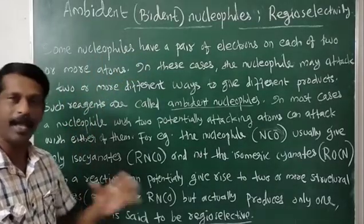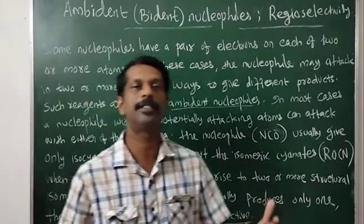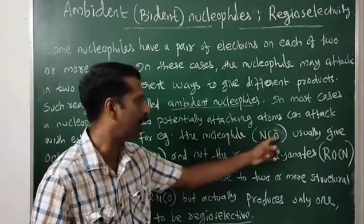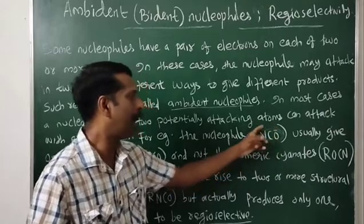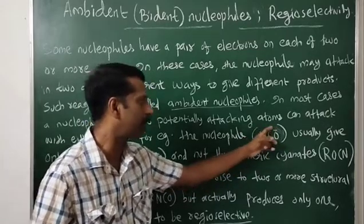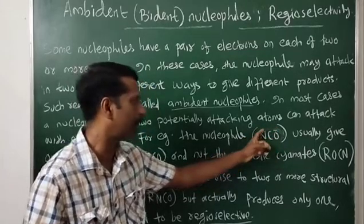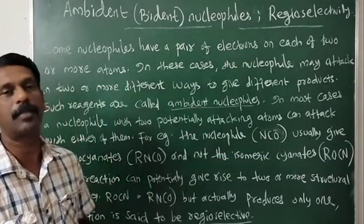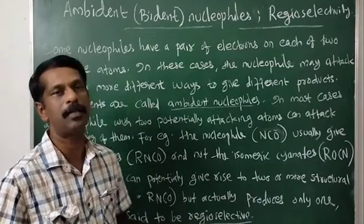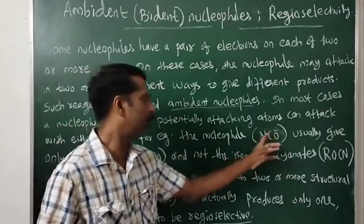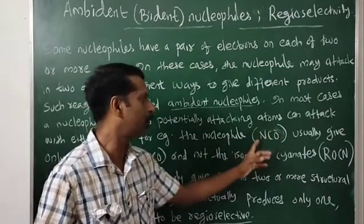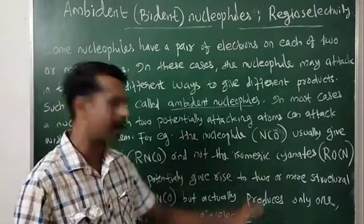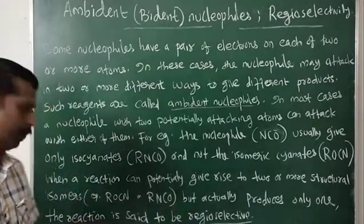To summarize: ambident nucleophiles have two sites for attacking the substrate molecule — in the case of NCO⁻, nitrogen and oxygen. Such nucleophiles are called ambident nucleophiles. Usually, even though there are two attacking sites, it will use only one site to form the product, and therefore that nucleophile is regioselective.